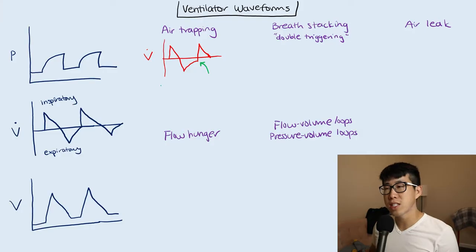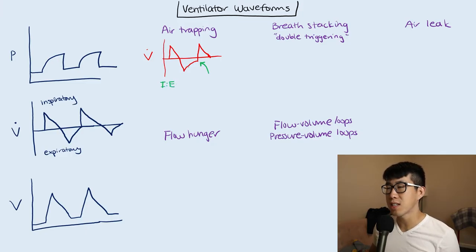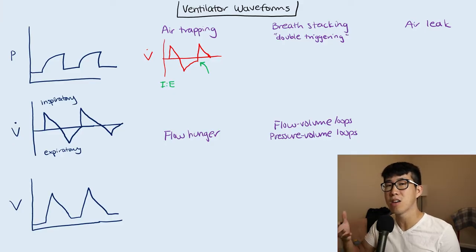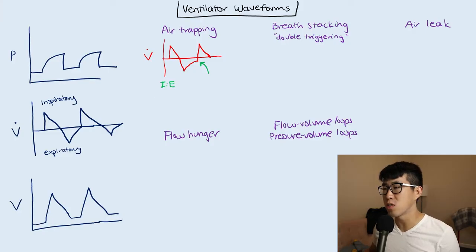So what are the ways to treat this? The main principle that we want to use here is the I-to-E time. This is a problem with obstruction in the airways, and by increasing the expiratory time, you're actually going to give time for that trapped air to come out of their airway system.